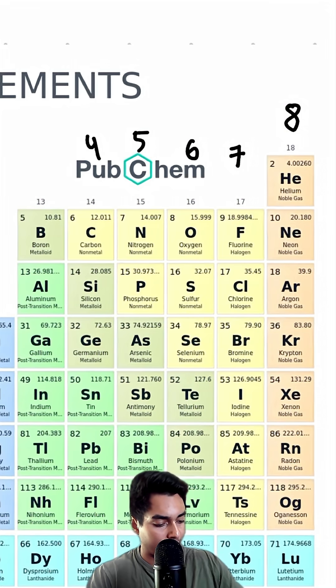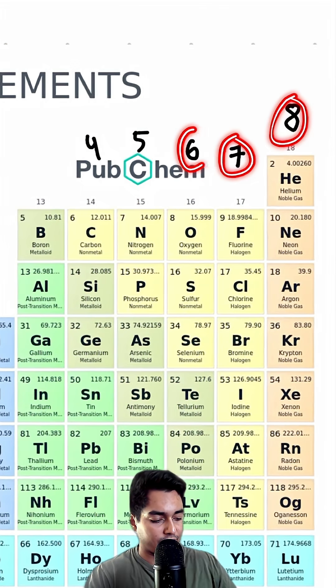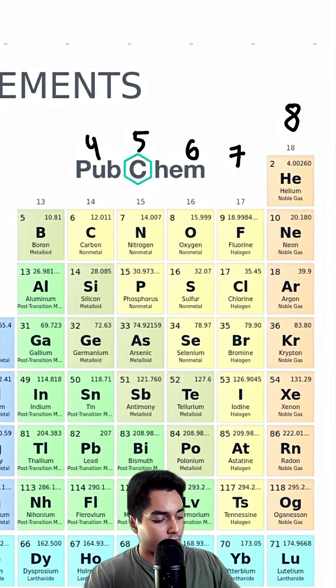Next, we have boron. Let's continue the pattern. We started with eight, went down seven, six, five, four, and of course, three.